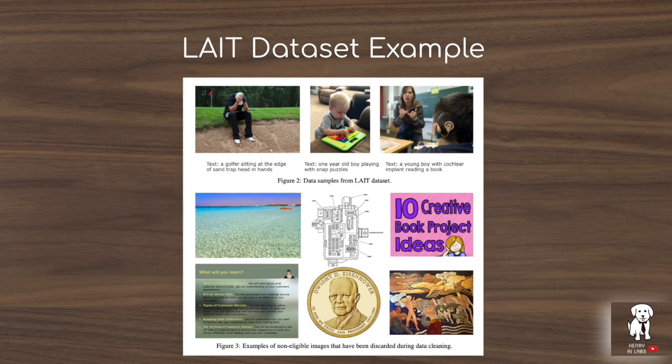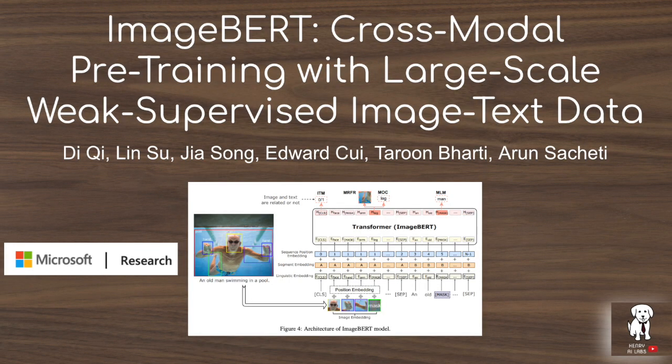The authors also describe constructing a new dataset with 10 million image-text pairs scraped from the web. The key finding of their study is a performance gain from a multi-stage pre-training approach — going from their new dataset to the Conceptual Captions dataset, then fine-tuning on the training sets of Flickr 30K and MS-COCO.